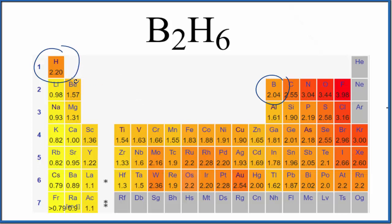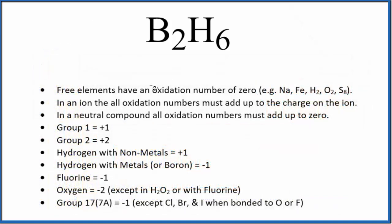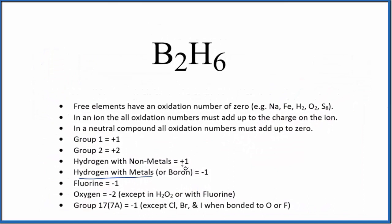So hydrogen should have a negative 1 oxidation state. When we look at our rules, hydrogen, when it's bonded to metals or boron, is going to be negative 1. So each one of these hydrogens is going to be negative 1.